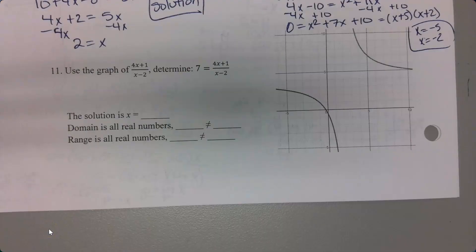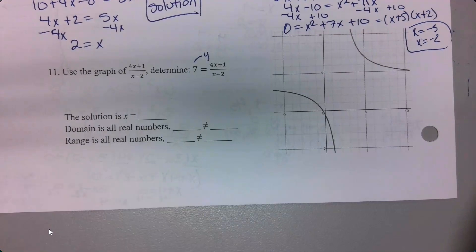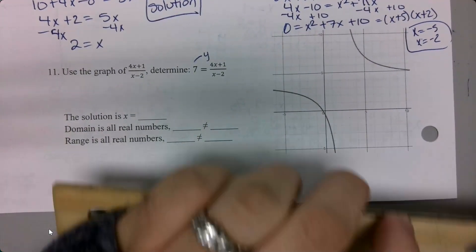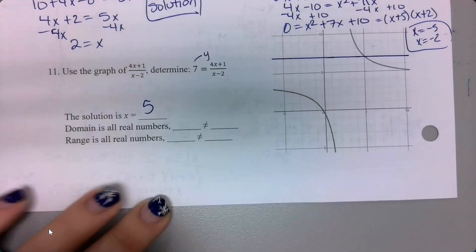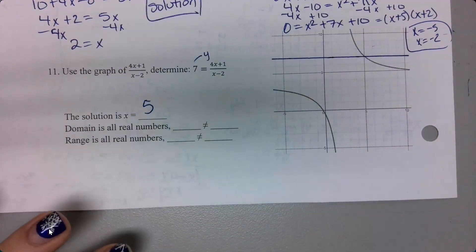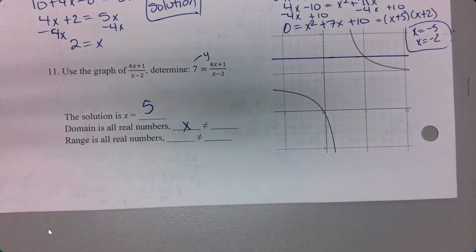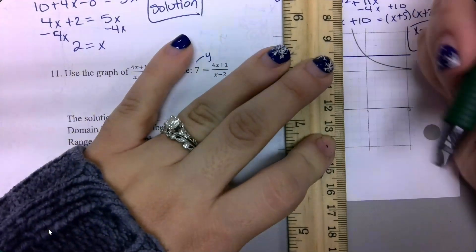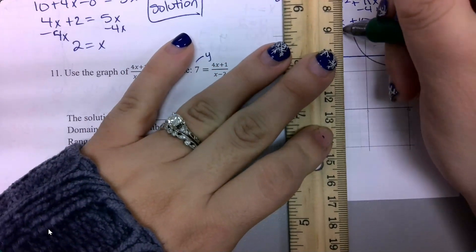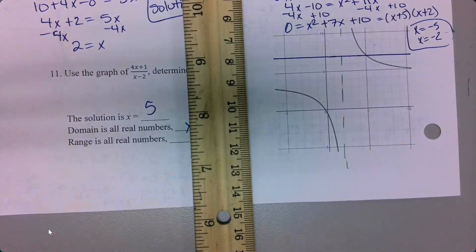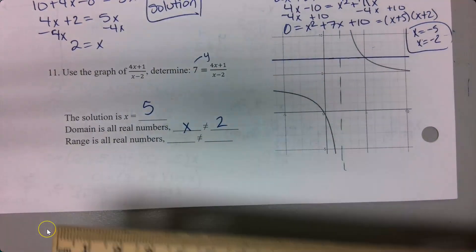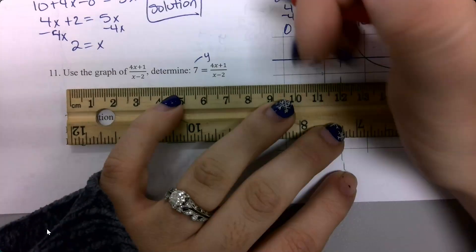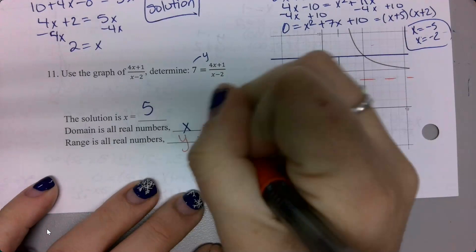This question wants me to use the graph to determine where this equation equals 7. So I'm looking for where y equals 7 on the graph. My y equals 7 right here, and my x value there is 5, so my answer is x equals 5. My domain is all real numbers. My vertical asymptote is at x equals 2. And my range is where the function avoids — y can't equal 4.